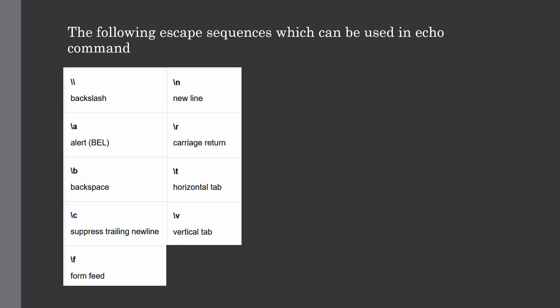These are the escape sequences you can use with the echo command: backslash newline, carriage return, backspace, horizontal tab, vertical tab, and form feed. You can use these escape sequences effectively as per your requirement with the echo command.